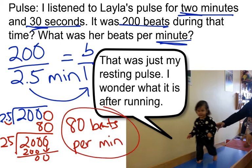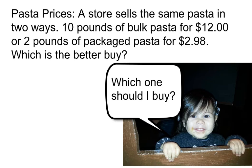Again, unit rate — I need to find my total over one. Let's look at one final example: pasta prices. A store sells the same pasta in two ways: 10 pounds of bulk pasta for $12, or 2 pounds of packaged pasta for $2.98. Which one is the better buy?